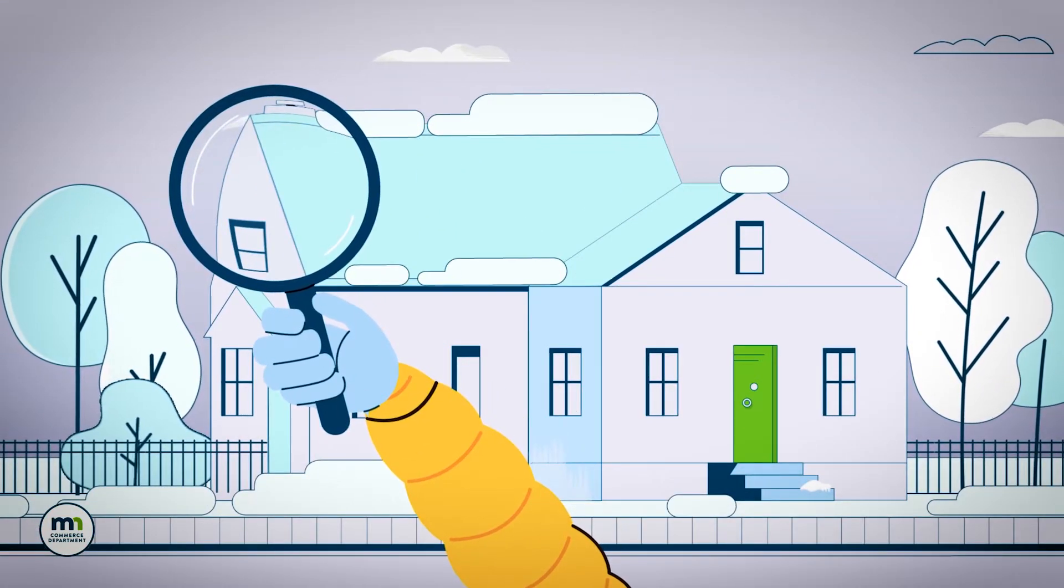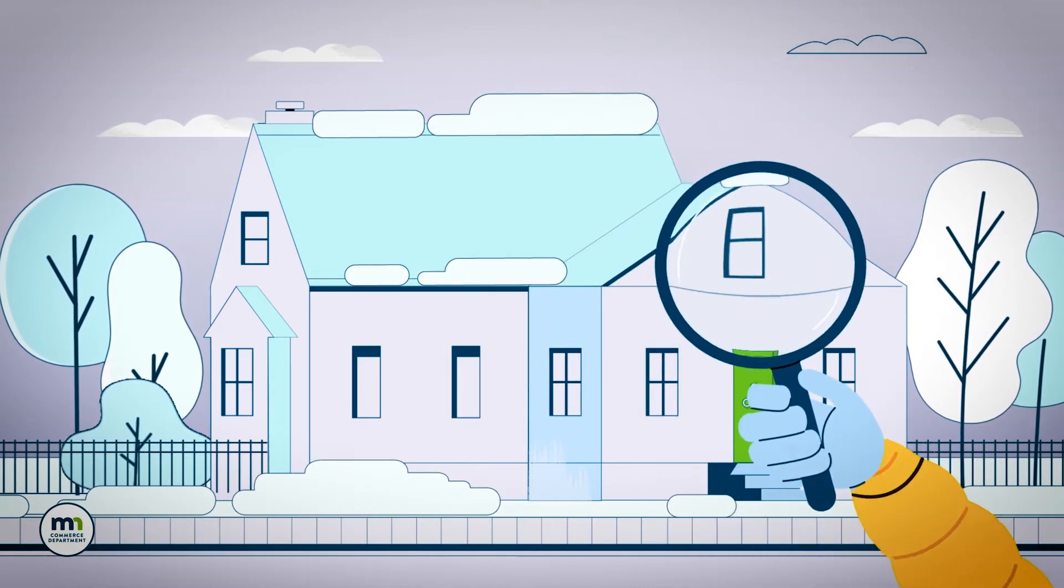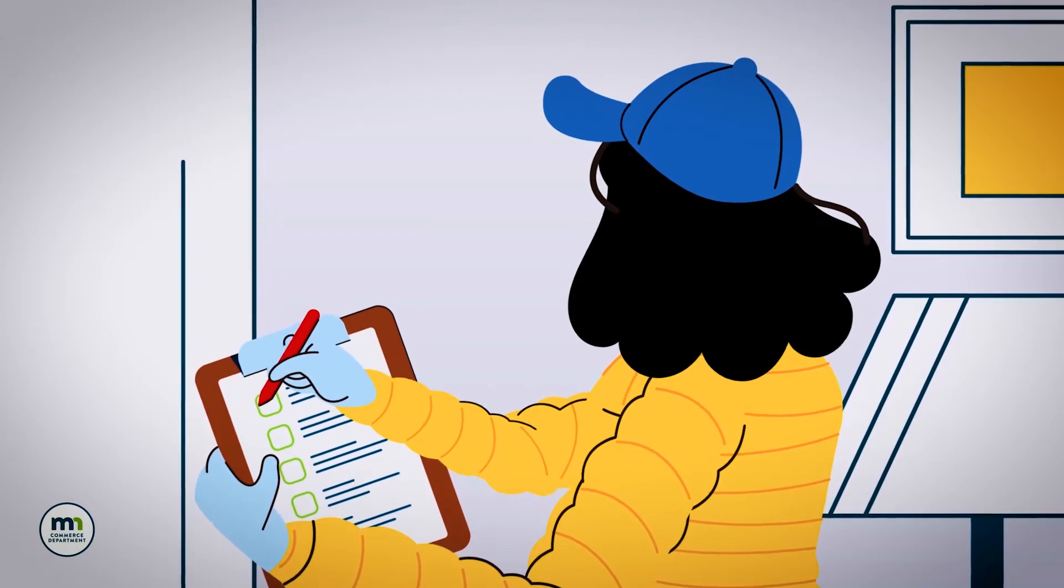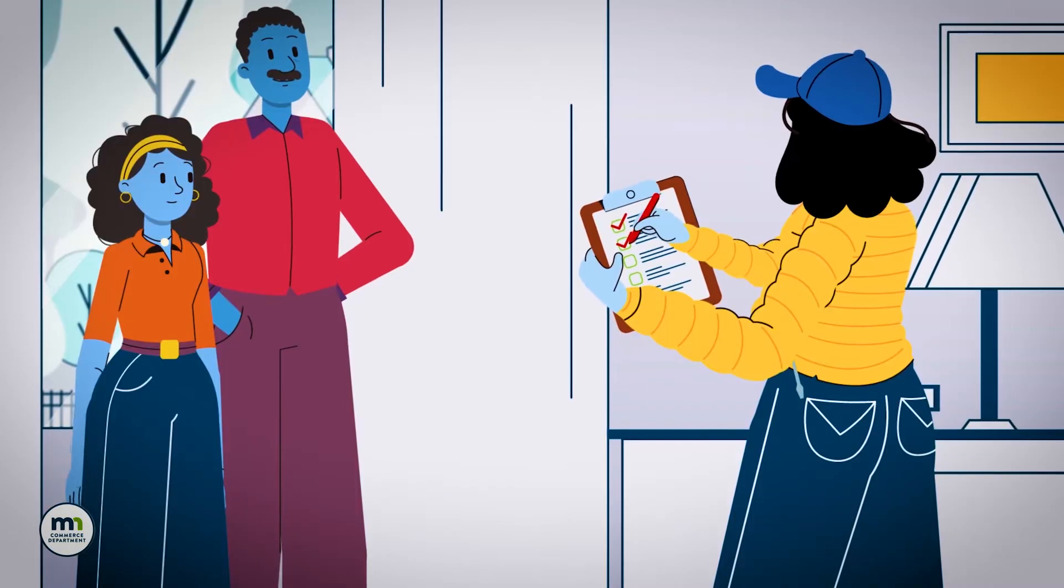So when we visit your home, we take a top-to-bottom look at how these systems are operating and where they might need improvements. This is called a home performance review. It's the first step in improving how your home works.